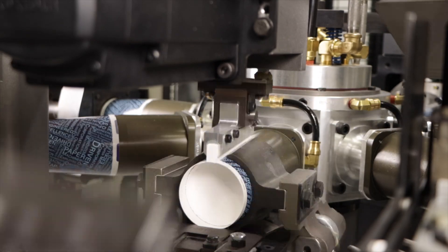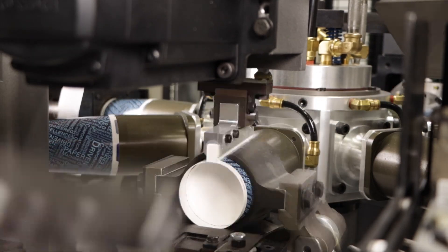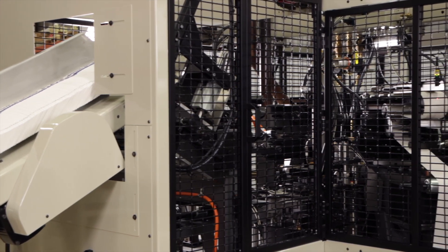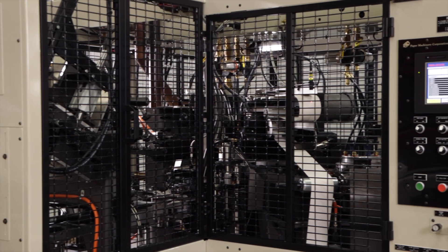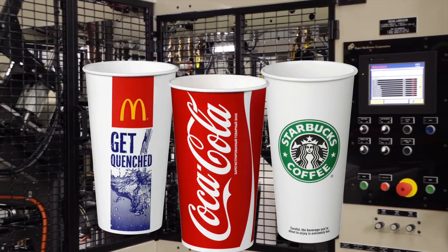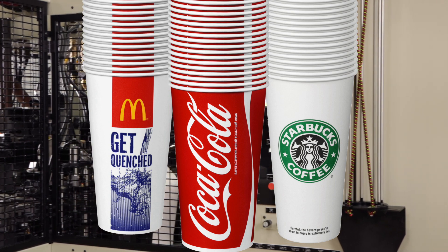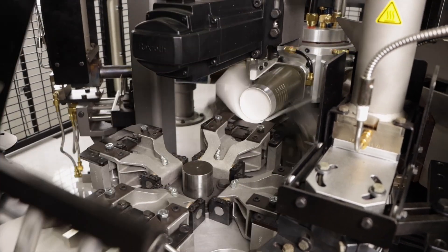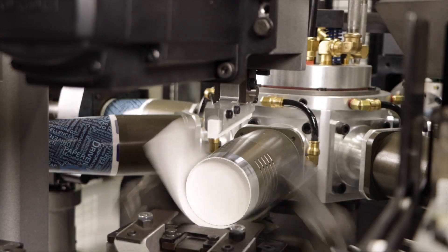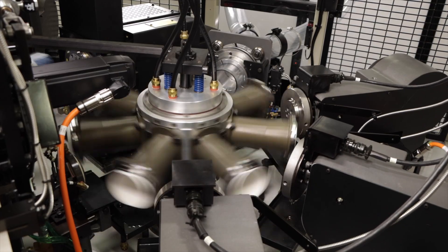The 2001S has been designed for speeds up to 240 containers per minute. The operation of the 2001S follows the sequence of all PMC forming machines, a format critical to achieving outstanding production efficiency and consistent quality containers. There are three turrets: one for transfer, a mandrel turret for wrapping and bottom formation, and a rimming turret for curling the top rim.